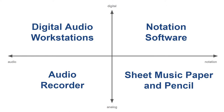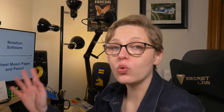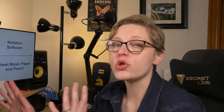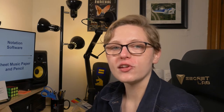On the horizontal axis we have audio on the left and notation on the right. Before computers, on the right-hand side we have notation software and sheet music with paper and pencil. I'm focusing my discussion today on the top two quadrants of the chart — notation versus audio — but you could apply most of these arguments to the bottom side as well.